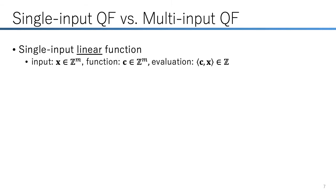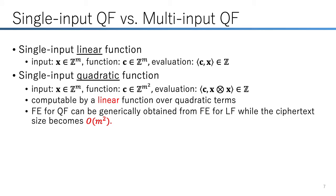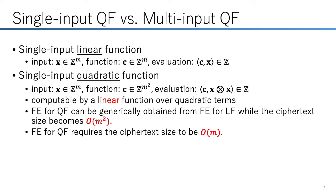I will explain these functions more formally. A single-input linear function is a multivariate linear function over the input. Similarly, a single-input quadratic function is a multivariate quadratic function over the input. It is not hard to see that a single-input quadratic function is a linear function over quadratic terms of the input, so we can construct a quadratic FE from a linear FE. But in this case, the ciphertext size inherently becomes order m squared. Basically, a functional encryption for quadratic functions refers to an FE with compact ciphertext, where the ciphertext size is order m.